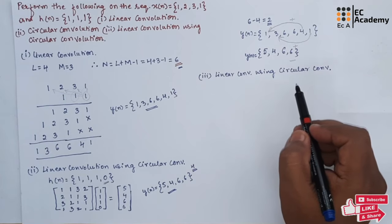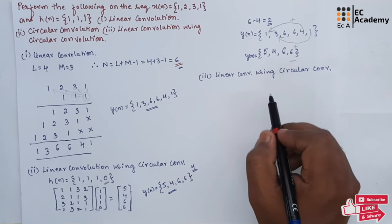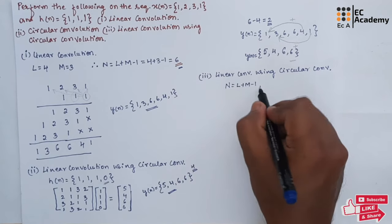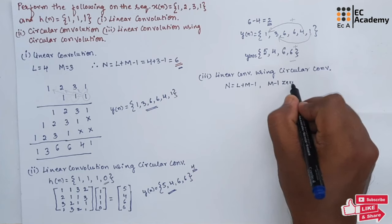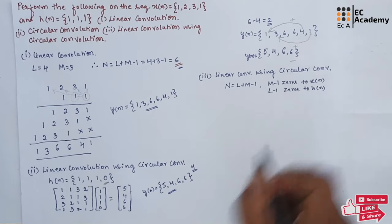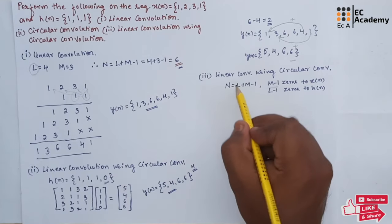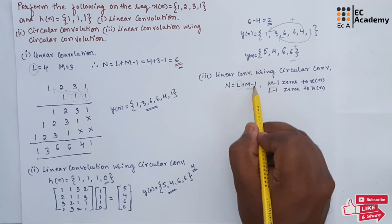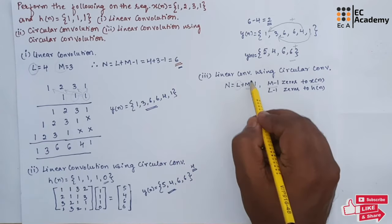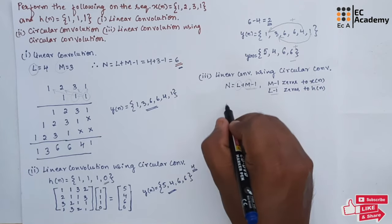Now let us perform linear convolution using circular convolution. To do this, let us make the length of both sequences equal to n, where n equals l plus m minus 1. We will append m minus 1 zeros to x of n and l minus 1 zeros to h of n. We append m minus 1 zeros to x of n because its length is l, so the remaining values needed are m minus 1. The length of h of n is m, so the remaining value is l minus 1, and we append l minus 1 zeros to h of n.